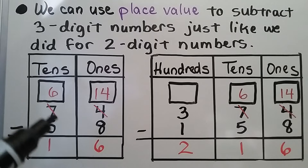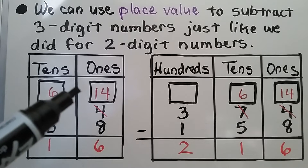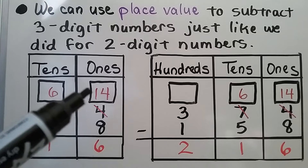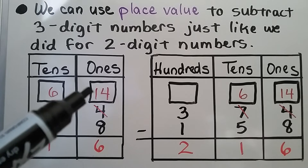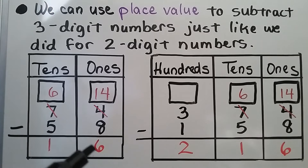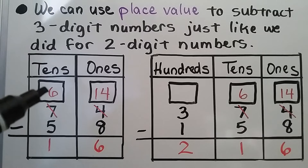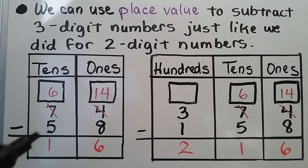We take a 10 from the tens place. The 7 becomes a 6, and we give it to the ones place. So now instead of four ones, we have 14 ones. 14 minus 8 is 6. Now we use our new 10 from regrouping — a 6. We subtract 5 and we get a 1. So 74 minus 58 is equal to 16.